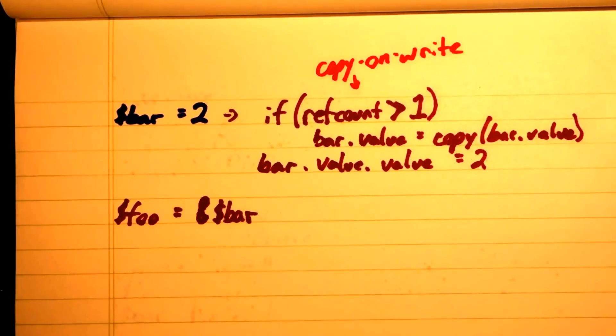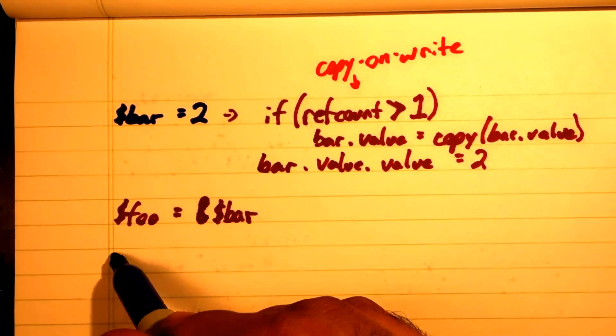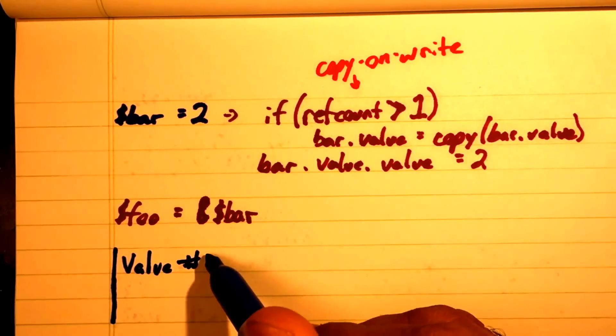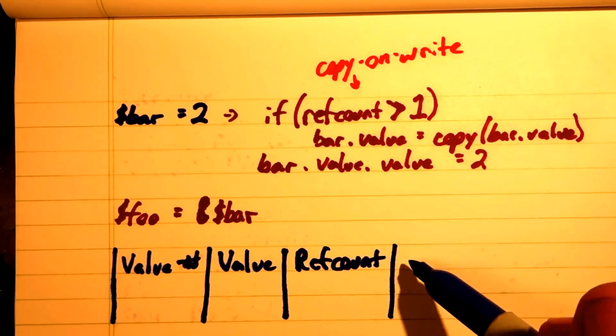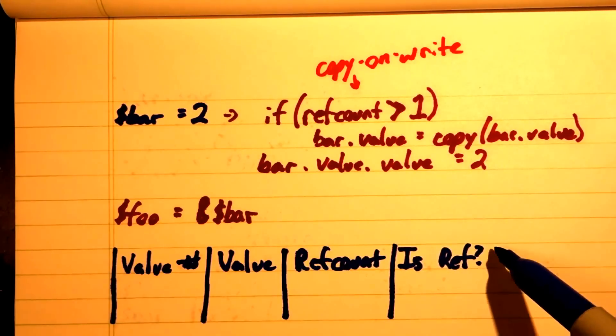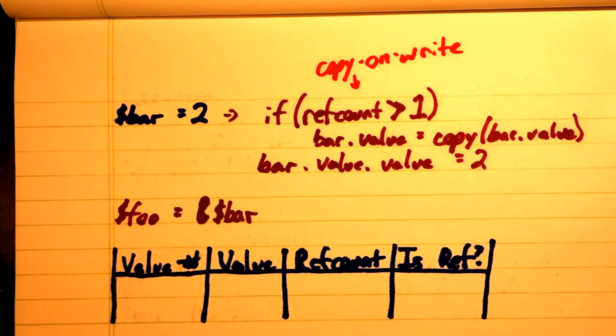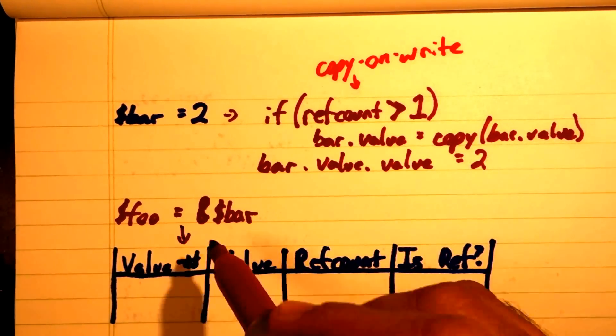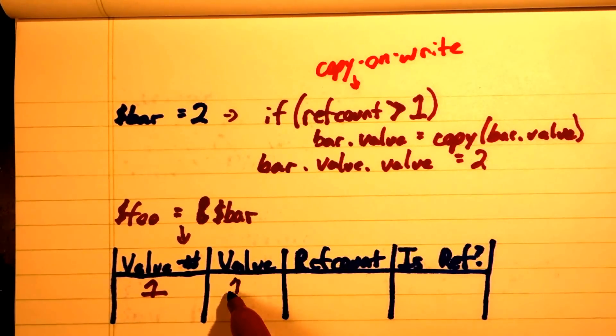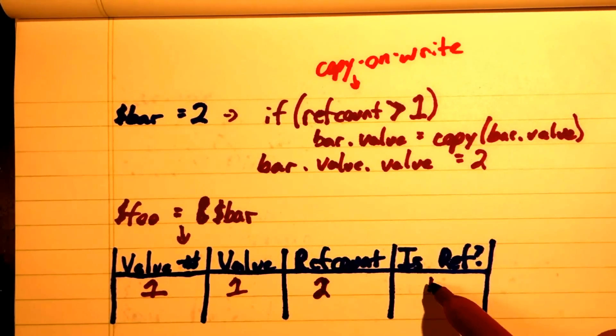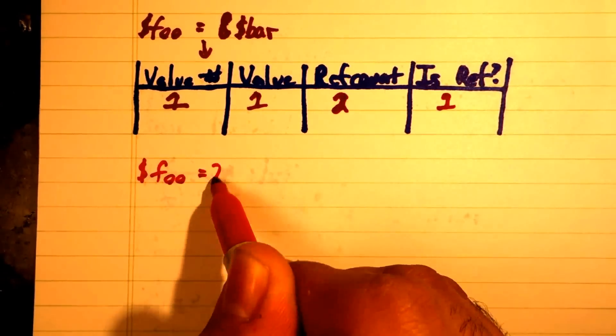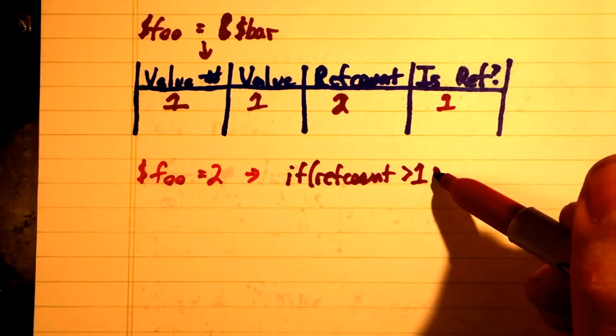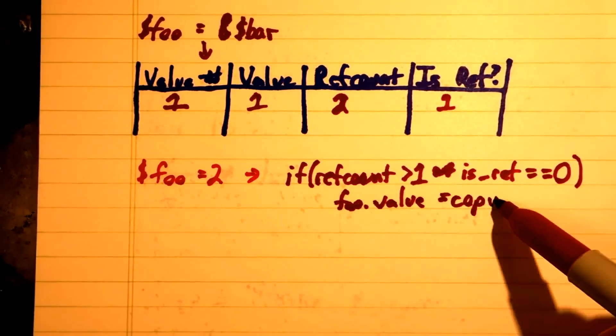Well, to implement this feature, all we need to do is disable copy on write. But we only want to disable this for referenced values. The way we can identify this is to add one more field to the value container. This is a simple Boolean value, which we'll call is_ref. If is_ref is true while we're editing a variable, we don't copy the value first.